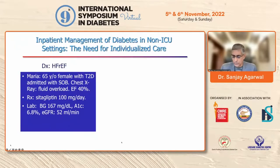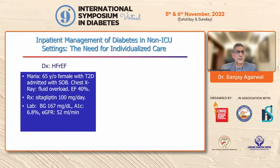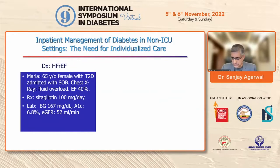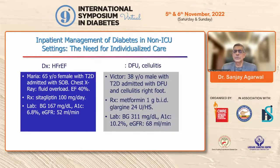In a non-ICU setting, patients can present with varied diagnoses. At one end of the spectrum, a 65-year-old female with diabetes was admitted for shortness of breath — heart failure with reduced ejection fraction. Her X-ray showed fluid overload, ejection fraction was 40%, and she was on sitagliptin 100 mg/day. Labs showed blood glucose of 167, HbA1c of 6.8, and eGFR of 52 — a fairly well-controlled patient.